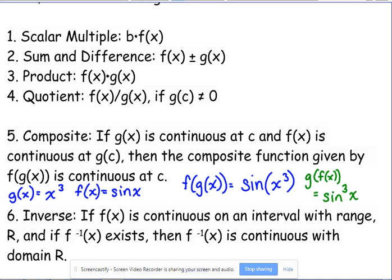And then inverse: if a function is continuous on an interval with a range of R, and if the inverse function exists, then the inverse function is continuous with a domain of R. Remember, inverse functions switch domain and range, so the range of the original is going to be the domain of the inverse function.